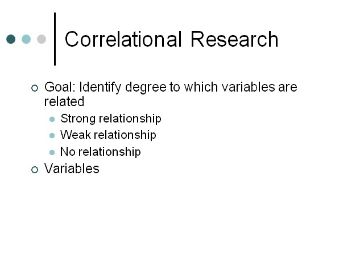In correlational research, we can look at the relationship between two variables or among multiple variables. Either way, the variables you're looking at can fall into one of two categories: predictor variables and criterion variables. Predictor variables are the variable or variables you're predicting with. If you know X and want to predict Y, then X is your predictor — the thing you know and are predicting with.